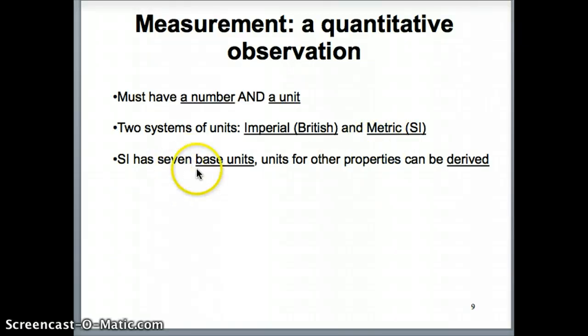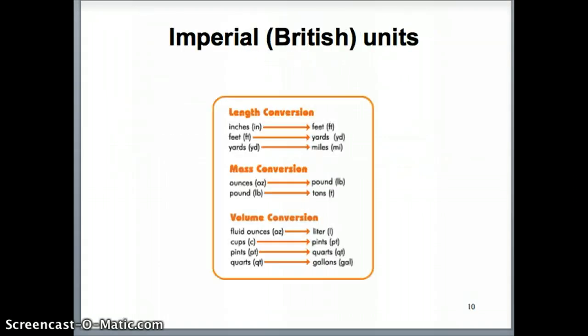Now, the SI unit has seven base units, which I'll talk about in the next slide. But those seven base units, from those base units, you can basically derive the units for the other properties. So we'll talk more about that in a second. But let's talk first about the Imperial system. These are the type of units that you see in the Imperial system. And I think a lot of these hopefully are familiar to most of you who grew up in the United States, that you have lengths measured in inches, feet, or yards, miles, and mass in ounces and pounds, and volume in fluid ounces and cups, pints, quarts, and so on.